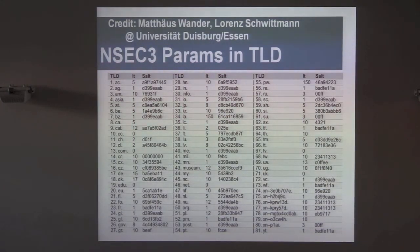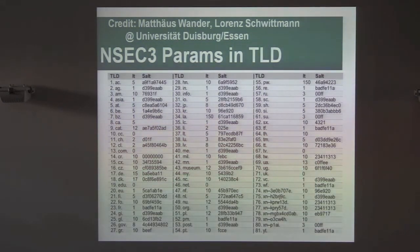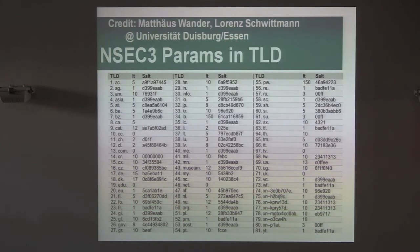We also looked at the .gov domain — the US government is very eager at deploying DNSSEC and has a website specifically to monitor DNSSEC deployment within the .gov domain, making it a useful testbed. We observed iteration values ranging from 1 up to about 30, highly dependent on individual domain operators.